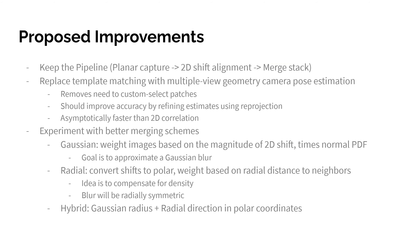The improvements I propose are to keep the pipeline but replace template matching with multiple view geometry to estimate camera poses and compute shifts based on that. I also want to experiment with better merging schemes. Some ideas are: Gaussian, which weights images based on the magnitude of the shift; radial, which treats all the shifts as polar coordinates and weights based on angular density; and hybrid, which does both at the same time.